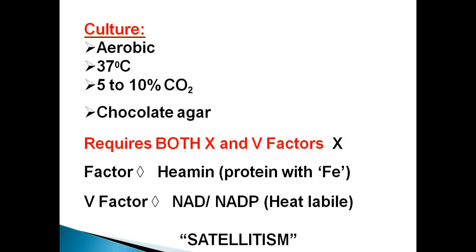Haemophilus ducreyi is aerobic in nature, grows at 37 degrees Celsius, and requires 5–10% CO2 for growth in a CO2 incubator. They grow on chocolate agar media, which contains two important growth factors: Factor X (tenth) and Factor V (fifth). These two factors are present in human blood or human RBCs.